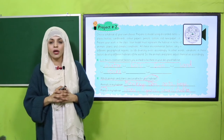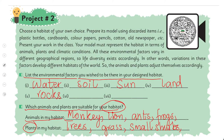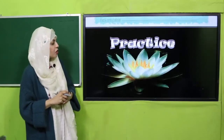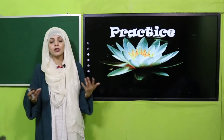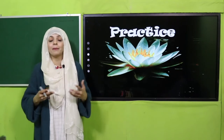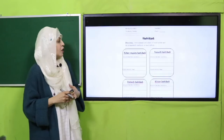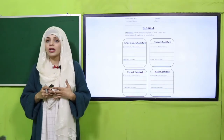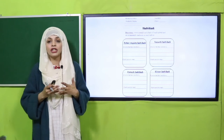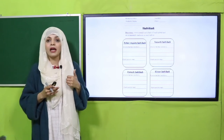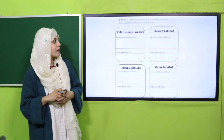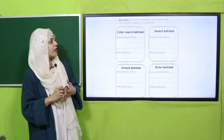I hope you have completed your project. Now is the time for practice so that I will evaluate you - have you done your project practically? On your screen you can see worksheet number 16. This will be provided to you by your teacher. Write down your name and class on the top, then write animals and plants of each habitat and environmental conditions in each habitat.